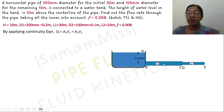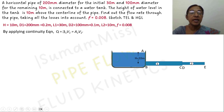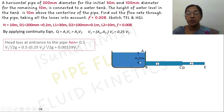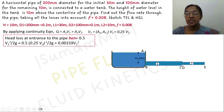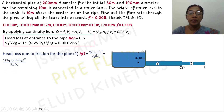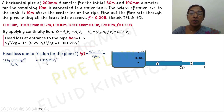The continuity equation applies here: A1V1 = A2V2. From this we establish a relationship between V1 and V2, giving V1 = 0.25 V2. The entrance loss is calculated as 0.00159 V2². The frictional loss for pipe section 1 is given by 4fL1V1²/(2g·D1). Substituting D1 and V1 = 0.25 V2, hf1 is expressed as 0.01529 V2².